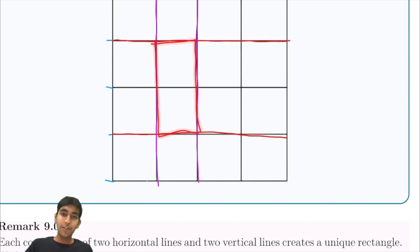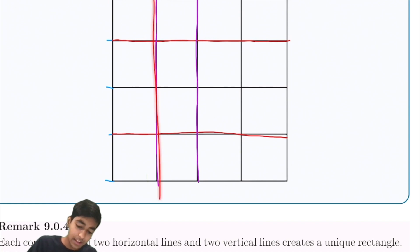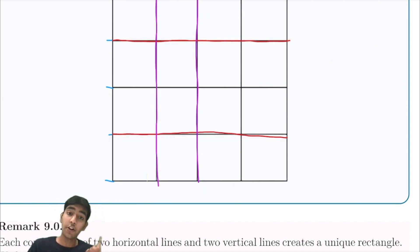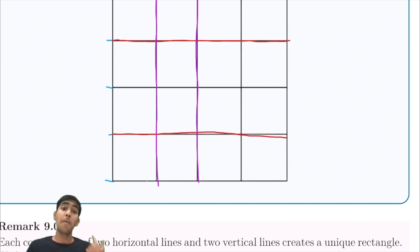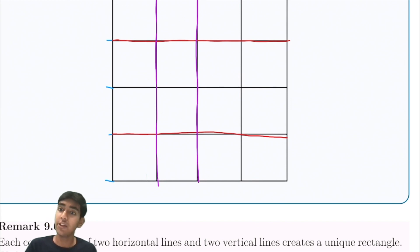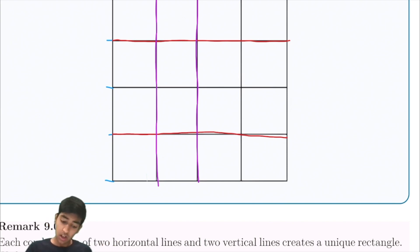So now we can just count the number of ways to choose two vertical lines and two horizontal lines. By the way, if you haven't already checked out the previous videos in this series, we talked about many other important topics in combinatorics like permutations, combinations, stars and bars, and many more. Definitely check that out.